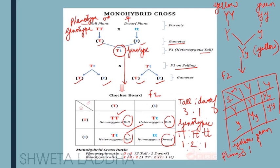The genotypic ratio in F2 is: 1 capital Y capital Y, 2 capital Y small y, and 1 small y small y — giving a genotypic ratio of 1:2:1. So again, the genotypic ratio of a monohybrid cross is always 1:2:1.